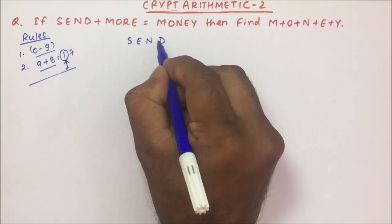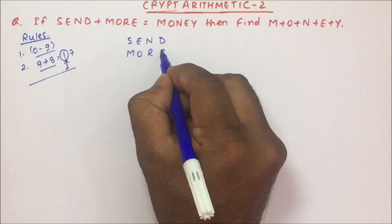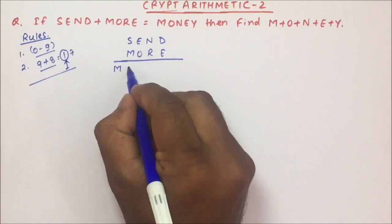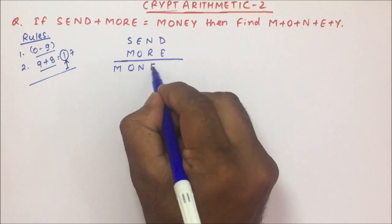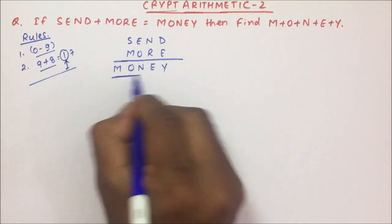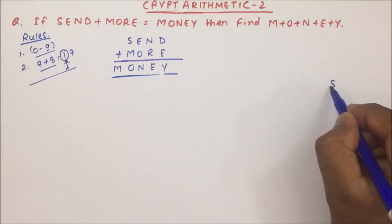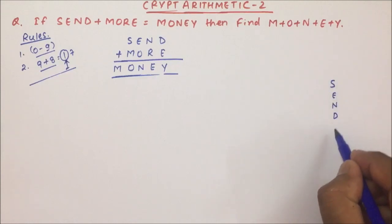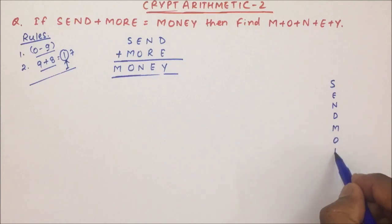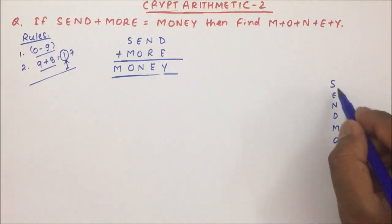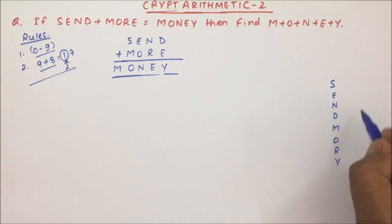SEND plus MORE is nothing but MONEY — that is what you have to add and get the values of MONEY from here. I will write out S, E, N, D, M, O, R, Y, and whatever value of MONEY or SEND+MORE we get, we will be writing it here.